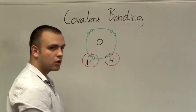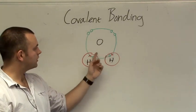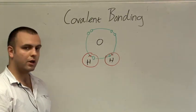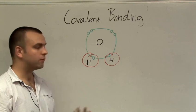In essence, they share the electrons between the three of them. Oxygen now has one, two, three, four, five, six, seven, eight electrons, a full outer shell. And each of the hydrogens has two electrons, a full outer shell.